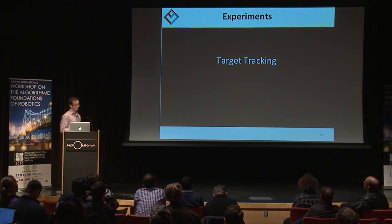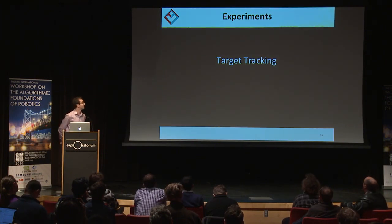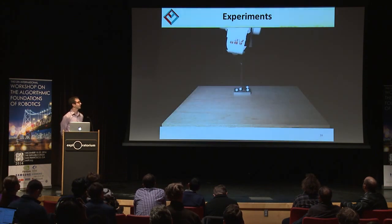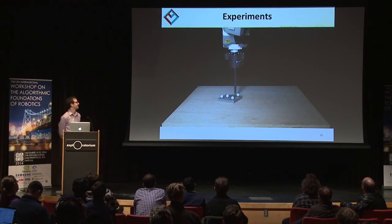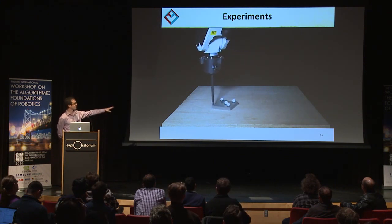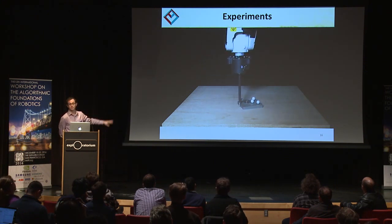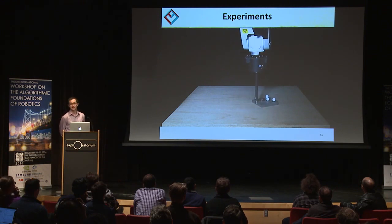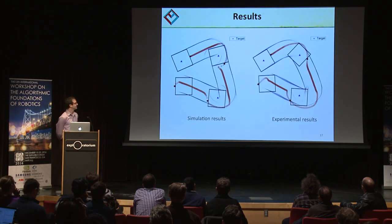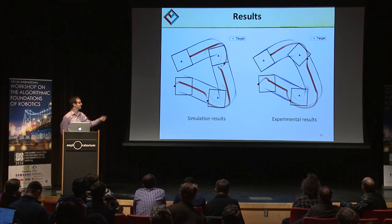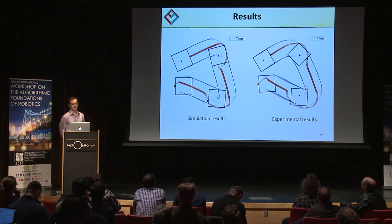Finally, we implemented a target tracking application. We have four predefined targets, and when the object reaches the first target within a tolerance of one centimeter, it goes on to tracking the next one. These are the simulation results compared to the experimental results, with the targets shown in blue.